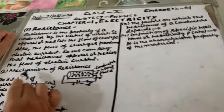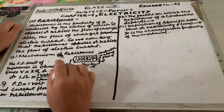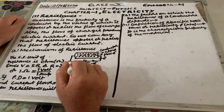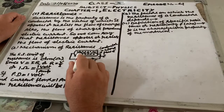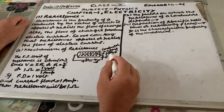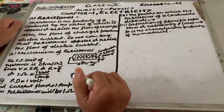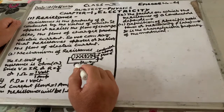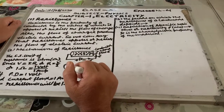Now the next point is the mechanism of resistance. In my previous episodes I have told you about the mechanism of resistance in detail, so just briefly I will tell you again. For that we consider a conductor. We know that every matter is made up of atoms or molecules. These are the atoms present in the conductor, and some free electrons are also indicated here which are moving in a zigzag direction.